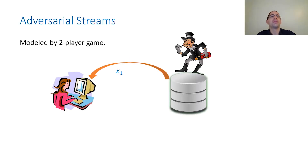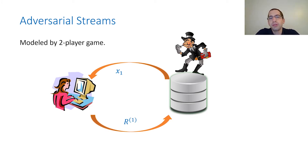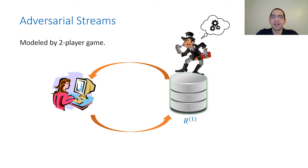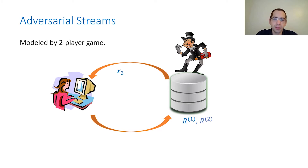The model is as follows: there are two players, an adversary and an algorithm. In each round, the adversary sends some element as part of the stream. Since we are looking at tracking algorithms, the algorithm immediately provides a response — the output on all elements seen so far. The adversary stores the response and the next element it sends may depend on it.